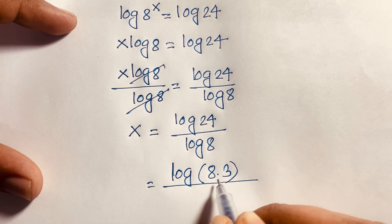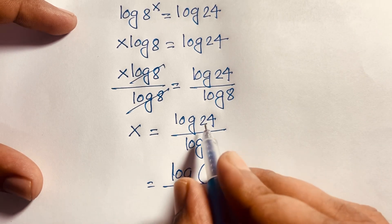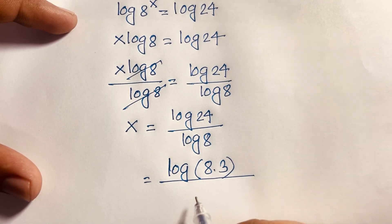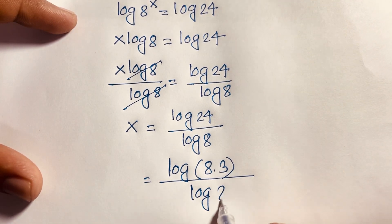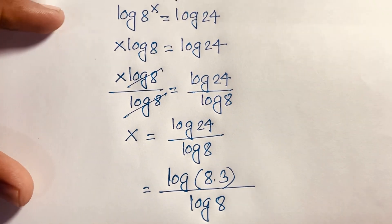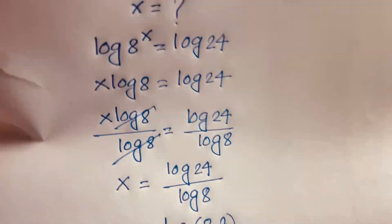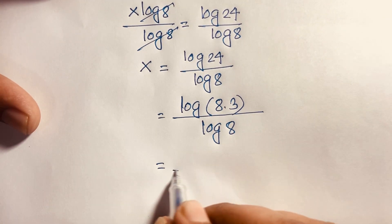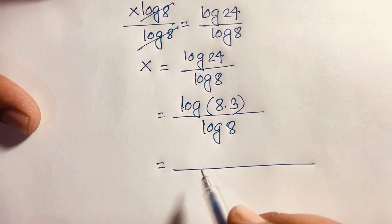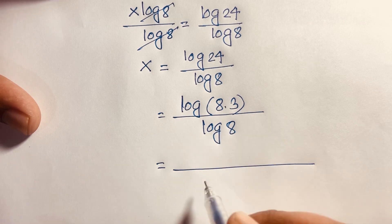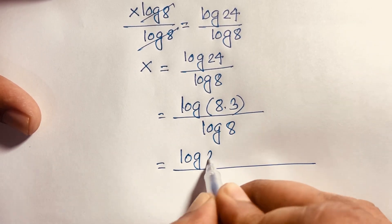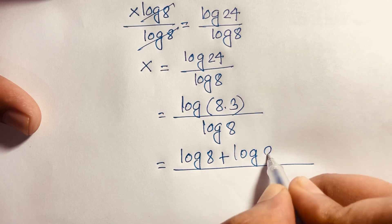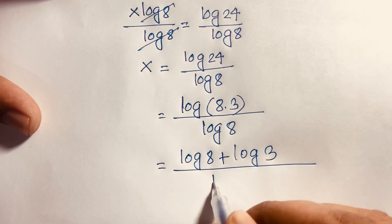Now, log(24) can be written as log(8 × 3), since 8 times 3 equals 24. According to logarithm rules, log(a·b) equals log(a) plus log(b), so log(8 × 3) equals log(8) plus log(3), all over log(8).